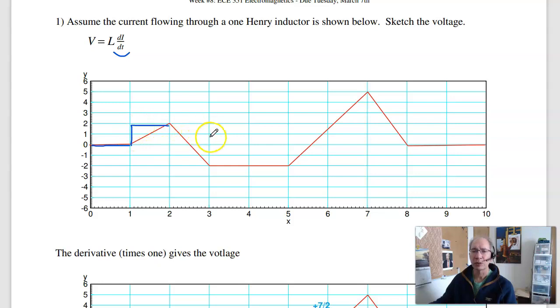Now it drops down 1, 2, 3, 4 - 4 amps in one second, drops down to minus 4. It's then flat, increases by 1, 2, 3, 4, 5, 6, 7 in two seconds, jumps up to 3.5.